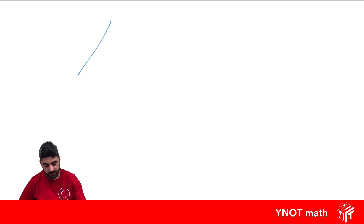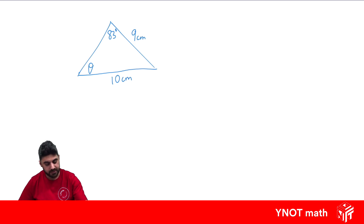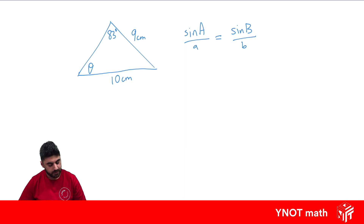Let's have a look at another example with a non-right angle triangle where one angle is 83 degrees, another is theta, one side is 9 centimetres, and the other side is 10 centimetres. Here we want to find an angle, so we're going to use the angle version of the sine rule: sin A over A equals sin B over B, using two pairs. That angle is opposite that side, and that angle is opposite that side — satisfying our condition of two angles and two sides with one unknown.